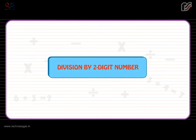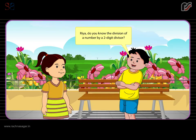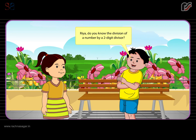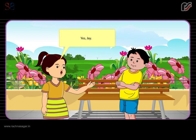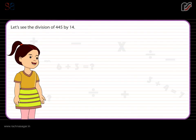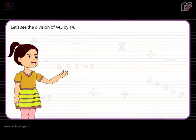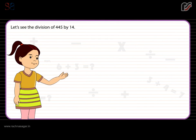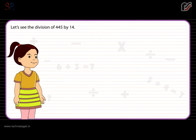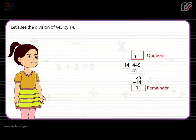Division by two digit number. Rhea, do you know the division of a number by a two digit divisor? Yes, Jay. Let's see the division of 445 by 14. Here, we find the quotient as 31 and remainder as 11.